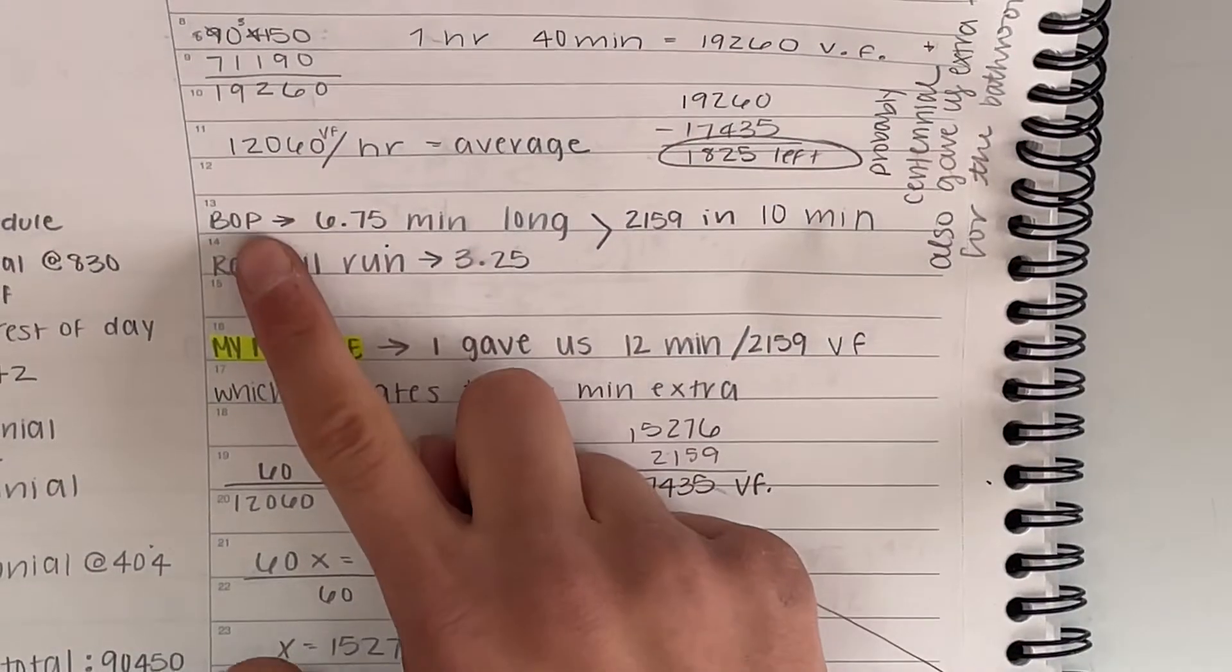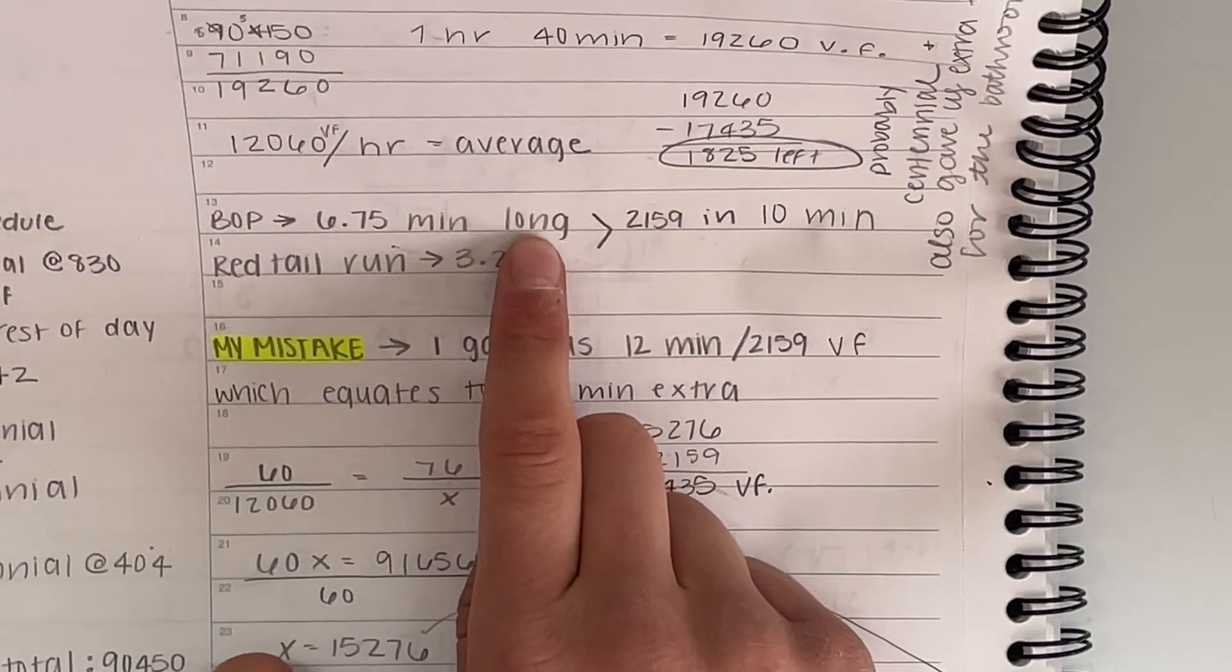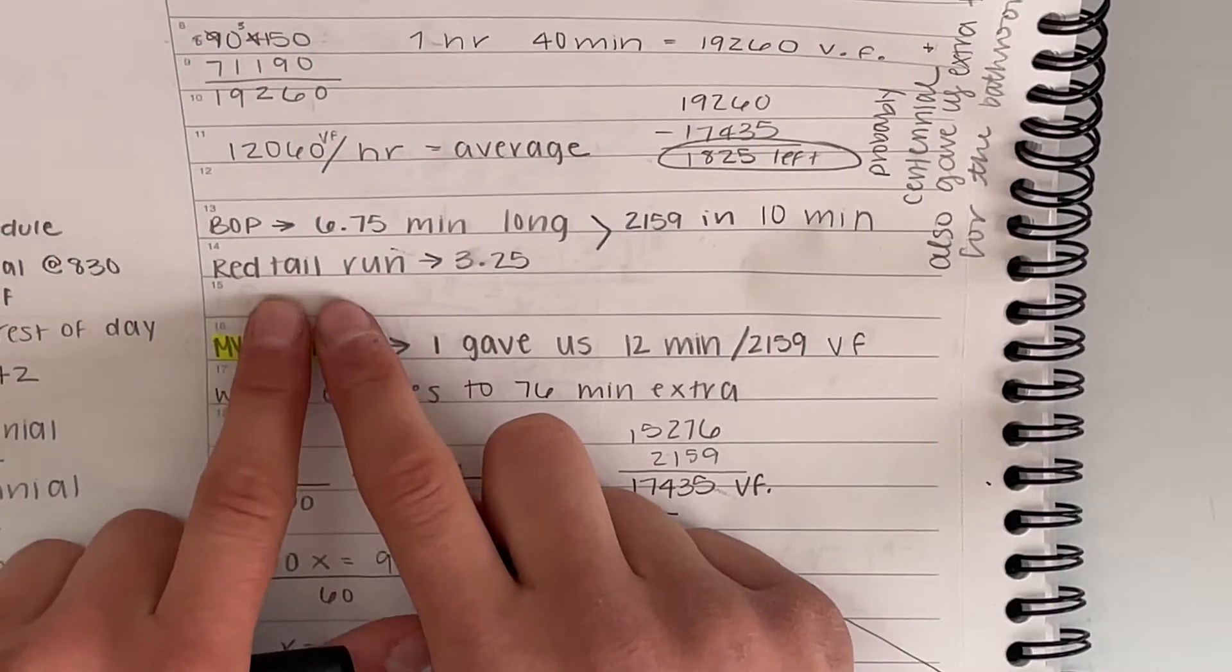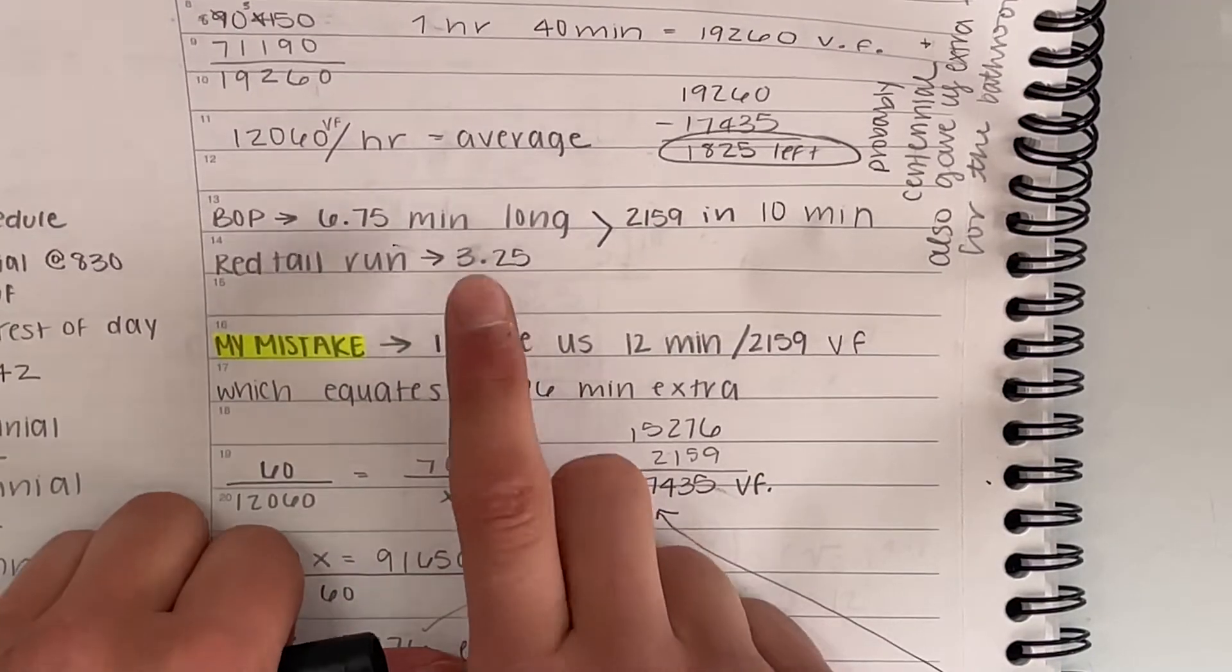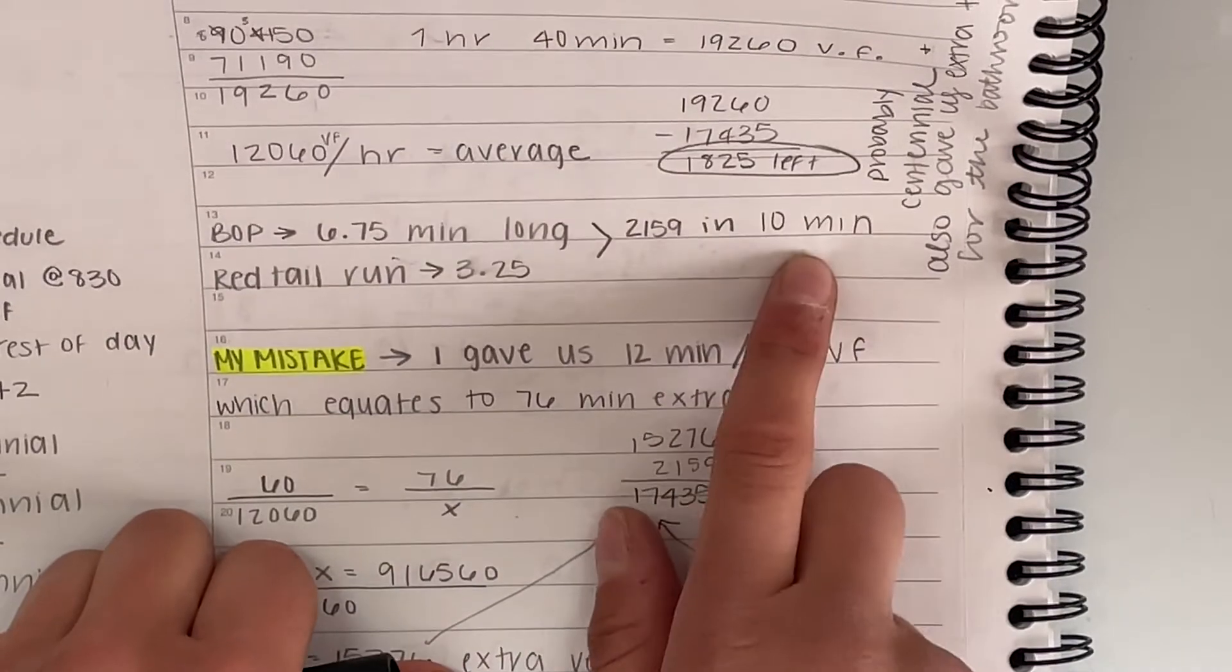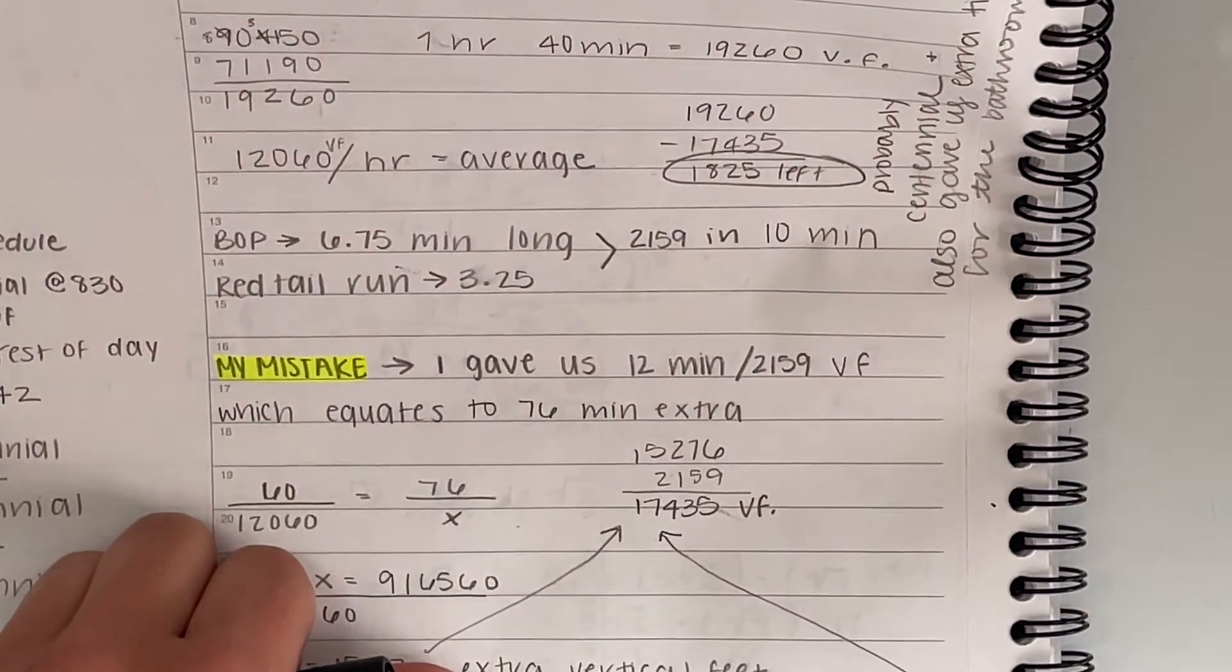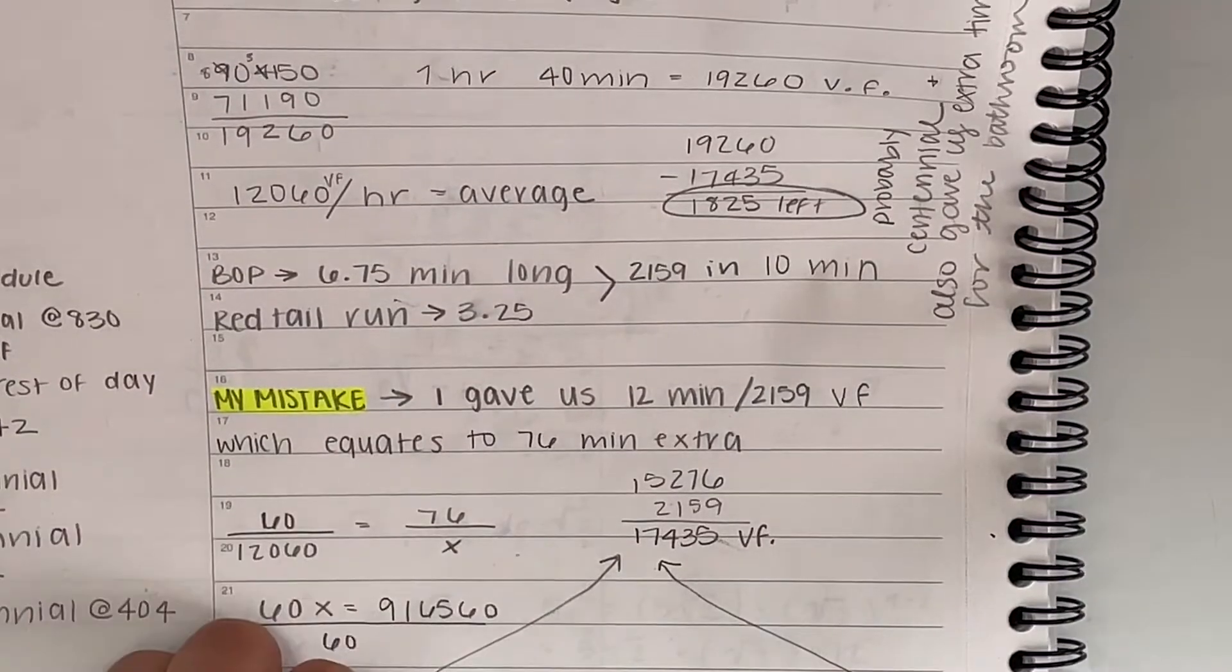Next up is right here. So Birds of Prey is 6.75 minutes long. Okay. Then on our watches, which we all have, which Carter and I both use, we were able to time us going down it and it took an average of 3.25 minutes. That's equal to 10 minutes per 2,159 vertical feet.